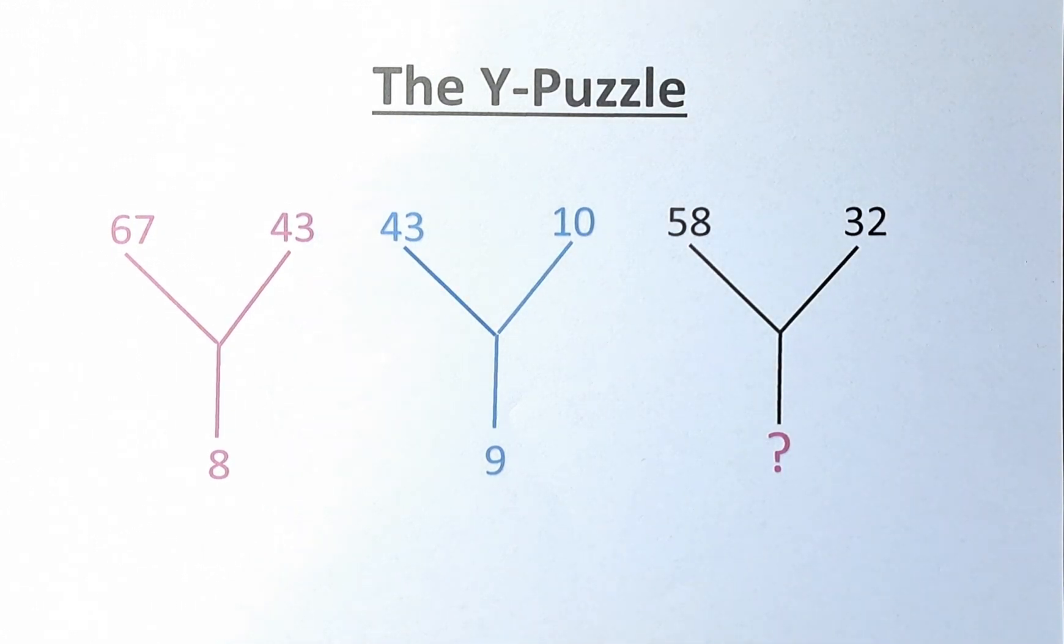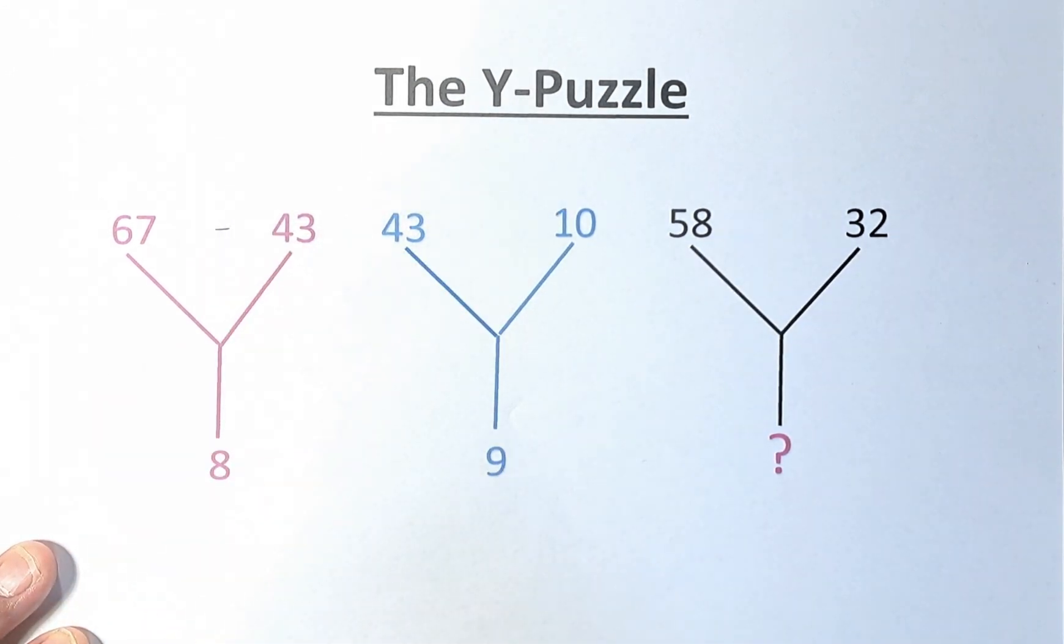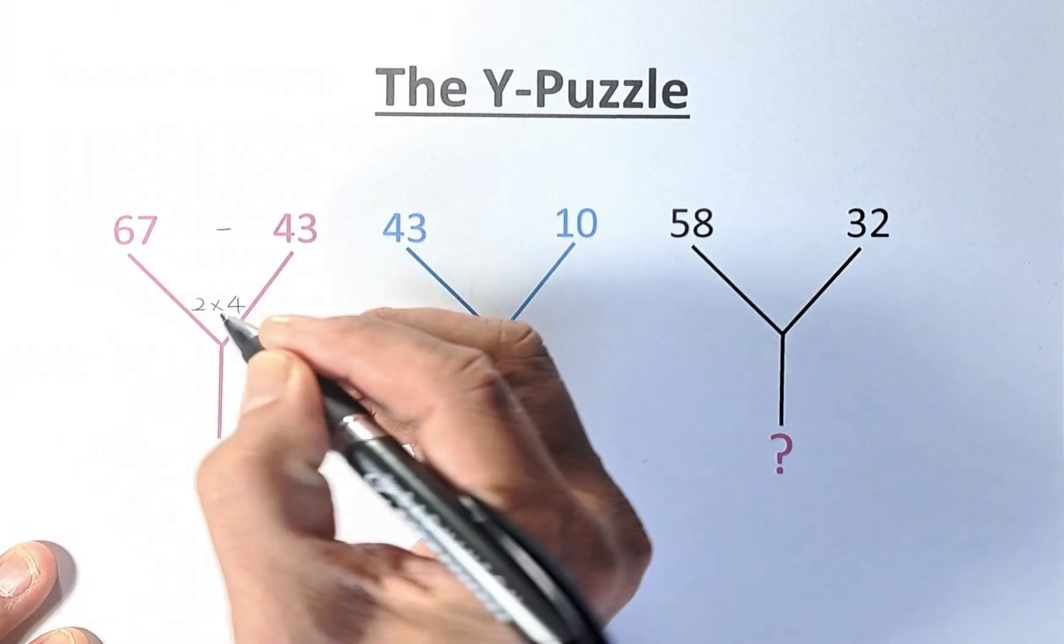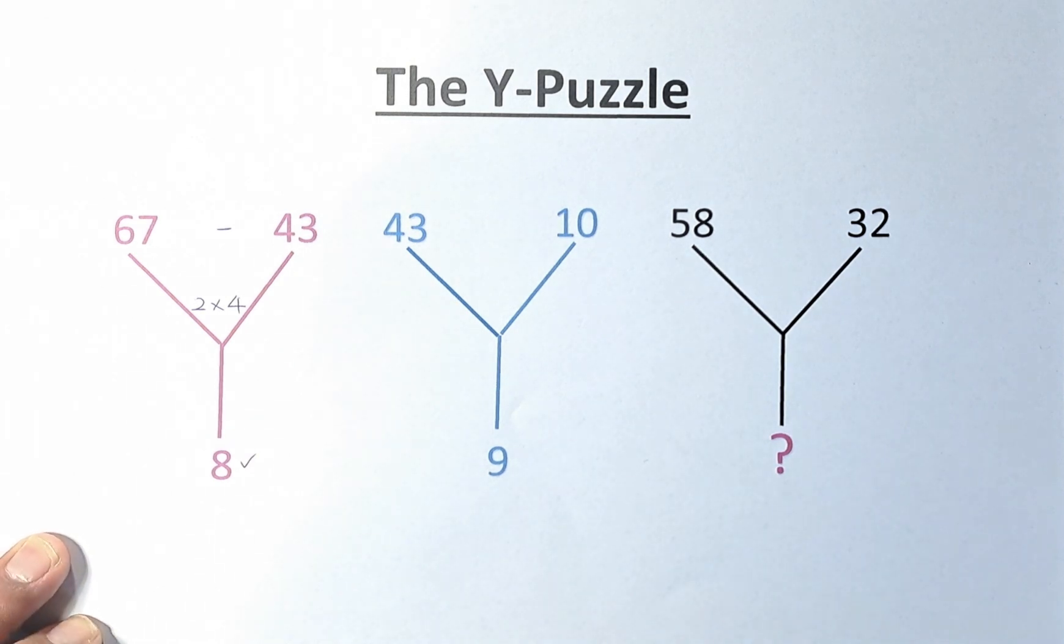Without further ado, let's try to solve this. So the question is that 67, 43 to give you 8. That is 67 minus 43. If you minus them, 67 minus 43, the answer is going to be 24. And what you do next, you're going to multiply the two numbers, 2 times 4, and that will give us 8. Interesting, isn't it?